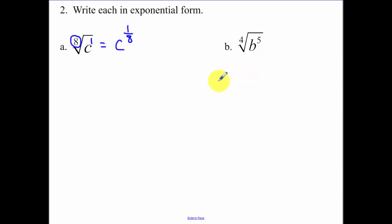For part b, it's b to some fractional power. Remember that the index is the number that goes in the bottom. The exponent goes on top.